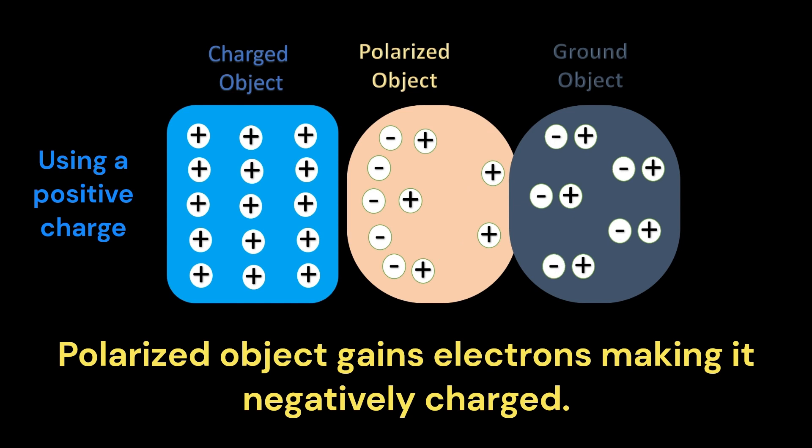Because of the movement of electrons from and into the polarized object during the grounding phase, it can now be considered a charged object.